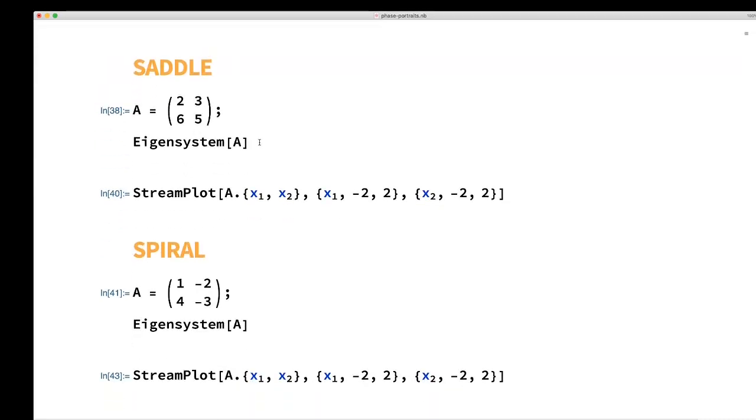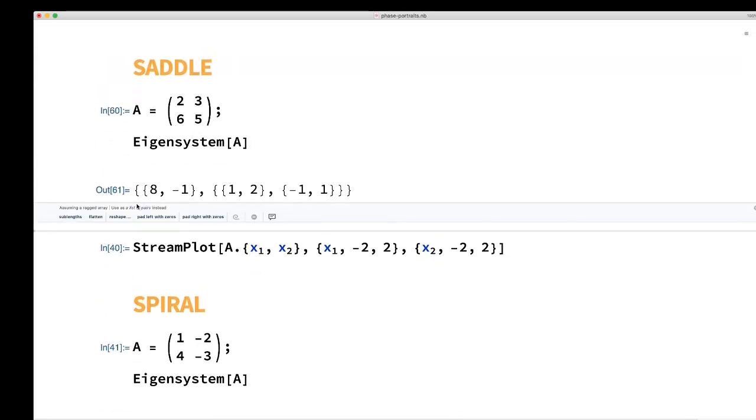Here's another system, and it's got two real eigenvalues of different signs. So this is going to be a saddle, and because one of them is positive, that means the saddle is always unstable.